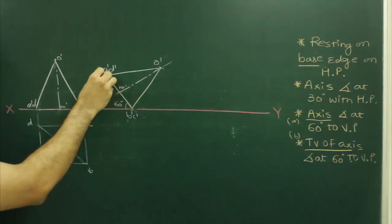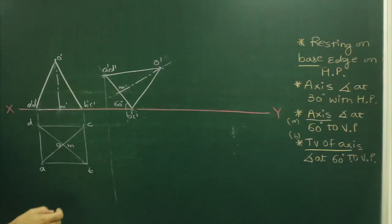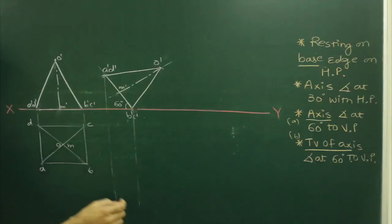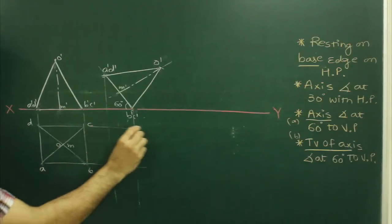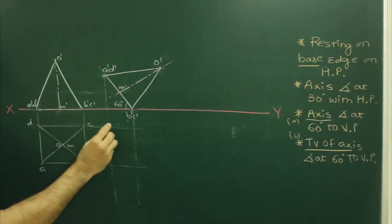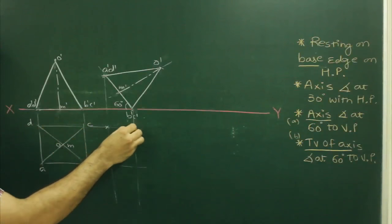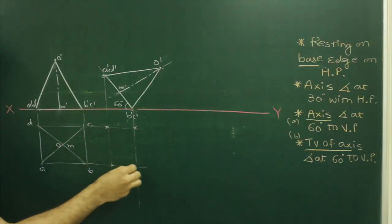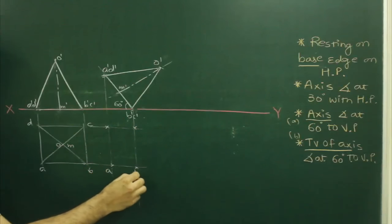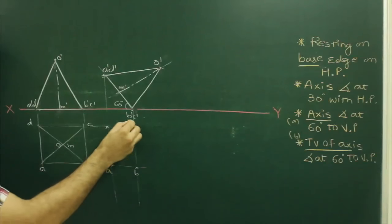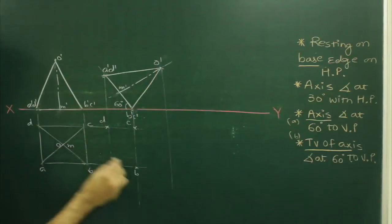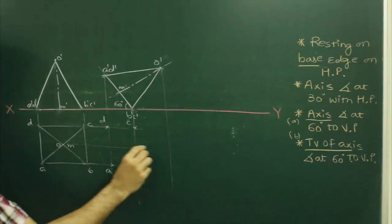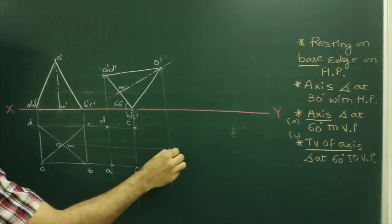After that, we project B dash, D dash from here, and B dash, C dash from here. Same way we project A, B, C, D from here to get four points A, B, C, D. Then O dash from here and O from here — we get point O.